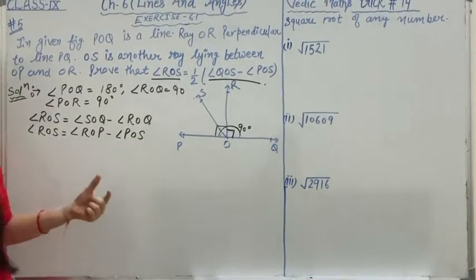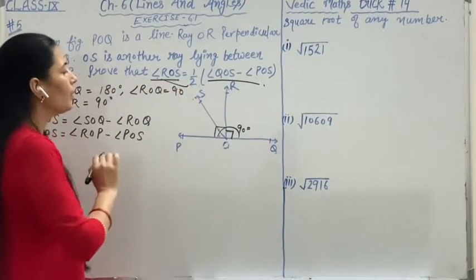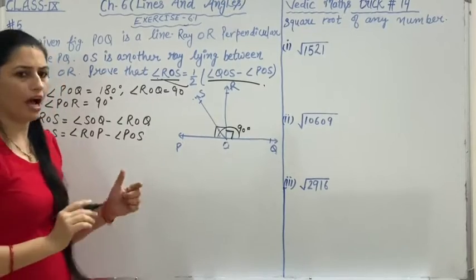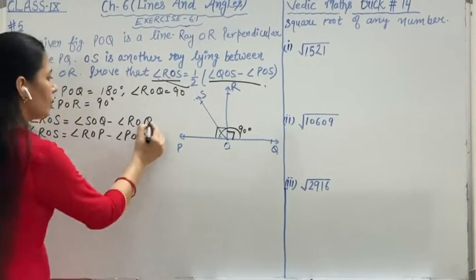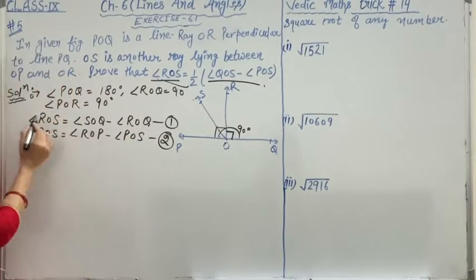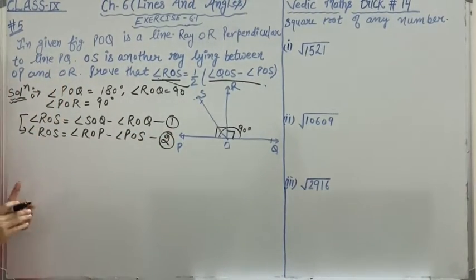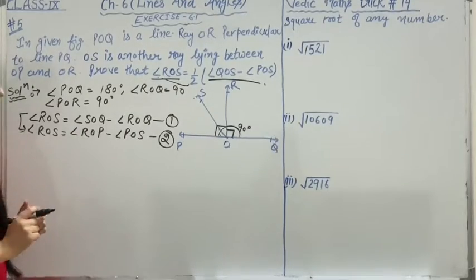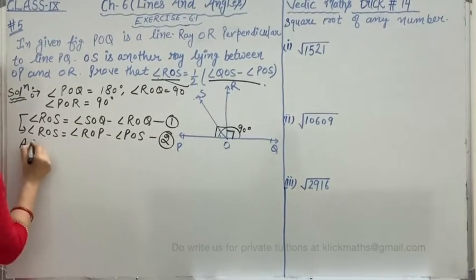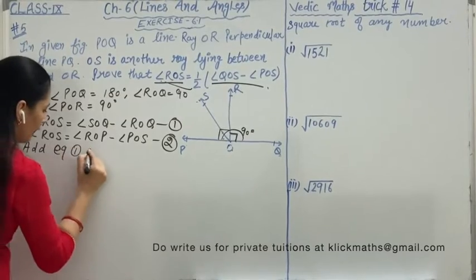You can see here, when we transpose in equation 2 to the left hand side, then we get 2 times angle ROS. This is equation number 1, this is equation number 2. When we add equation number 1 and 2, we get on the left hand side 2 times angle ROS.